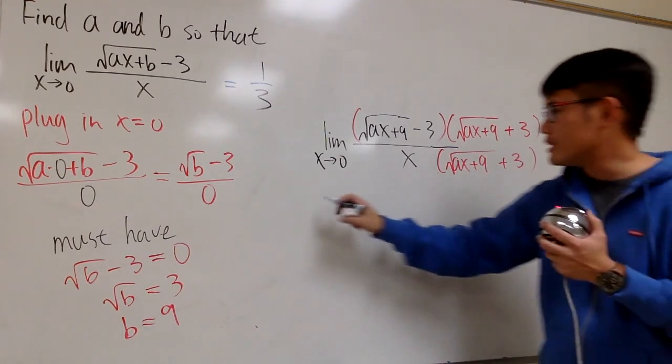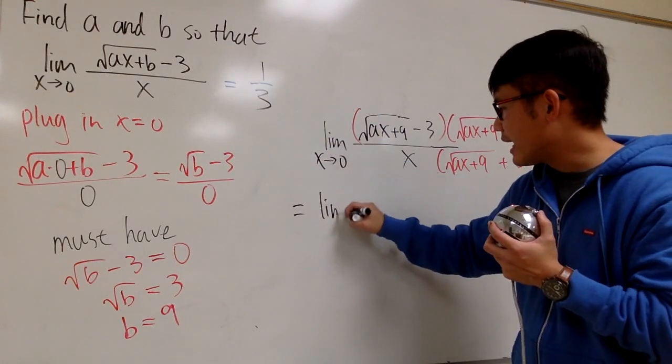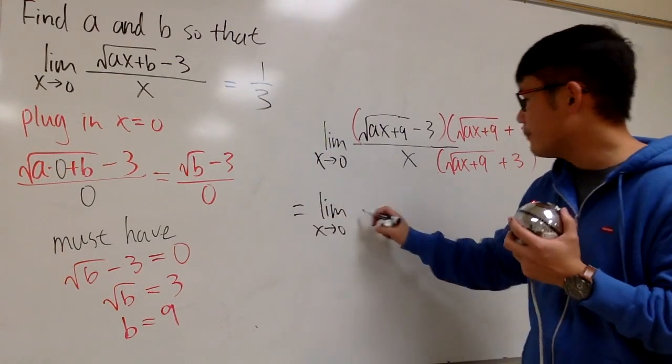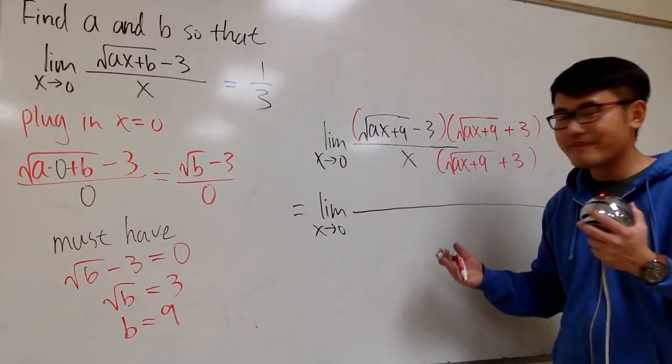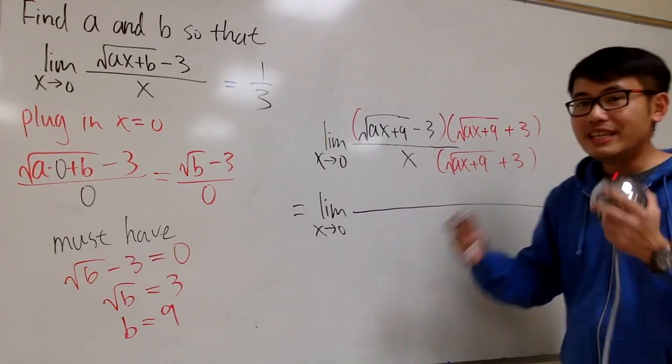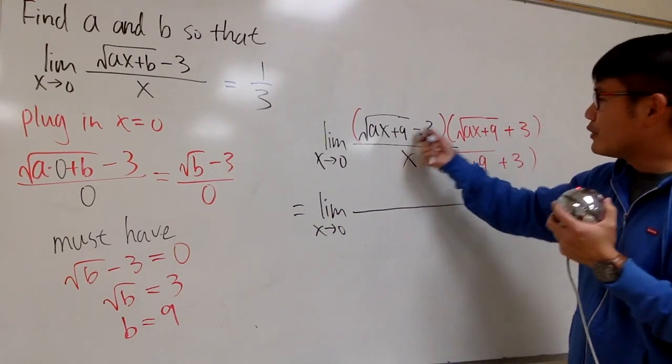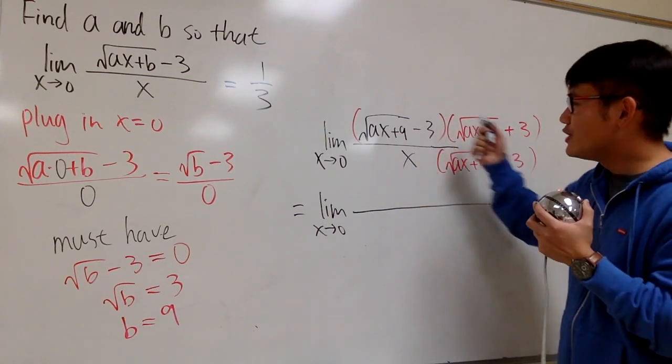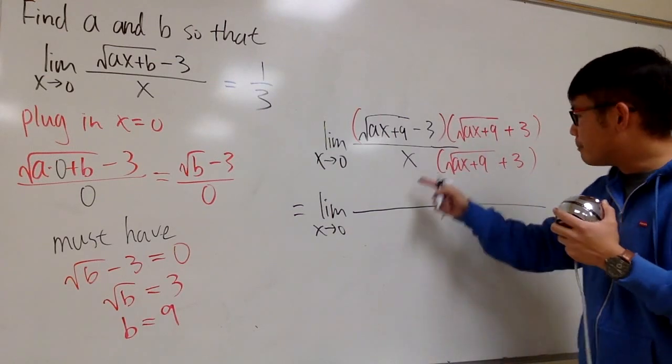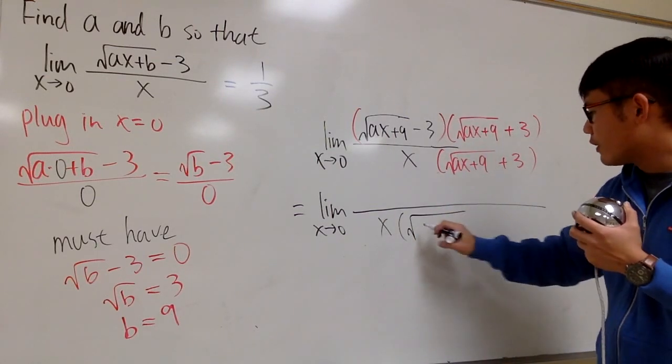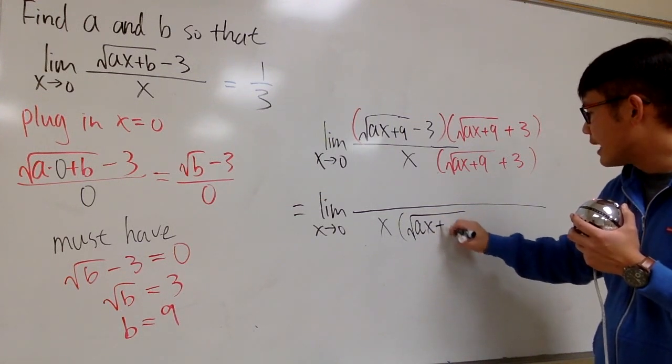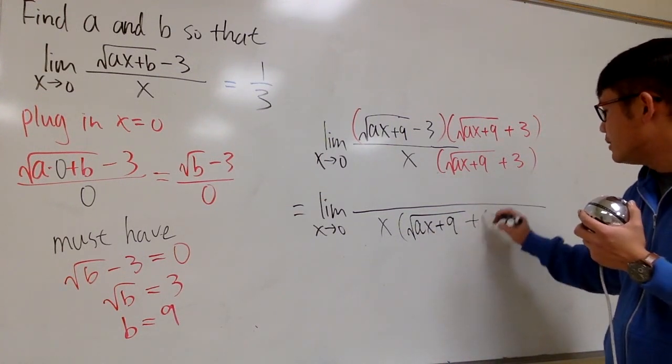And let's do it real quick to see what we have. Let's write down the limit again, as x is approaching 0. And keep in mind, whenever we're doing this kind of thing, the bottom, just leave it, because we are trying to fix the top only. The conjugate is only fixing the top. The bottom, we just leave it, so we leave it as x times square root of ax plus 9, and then plus 3.